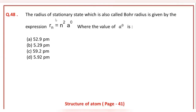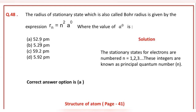The radius of a stationary state, also called Bohr's radius, is given by the expression shown. The value of a₀ is 52.9 picometers.